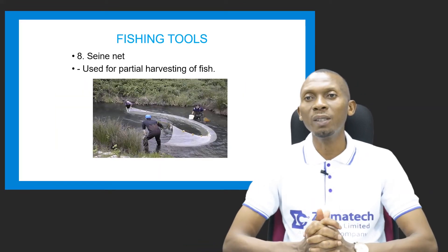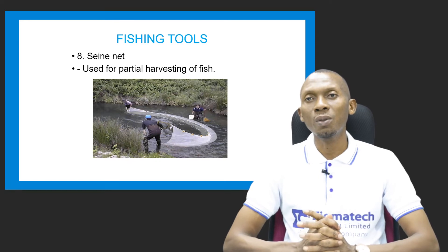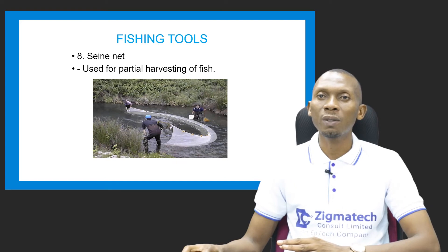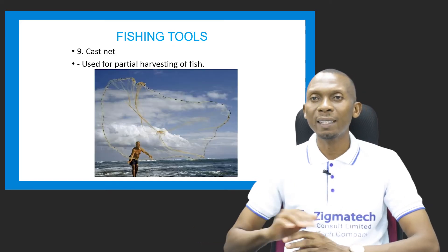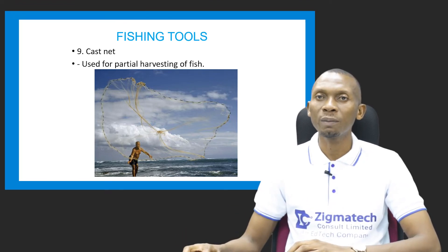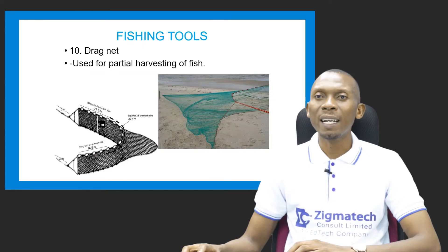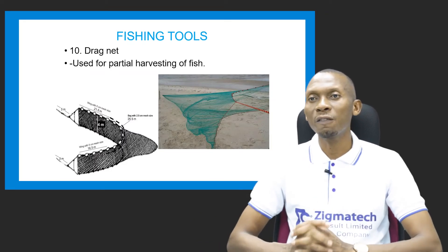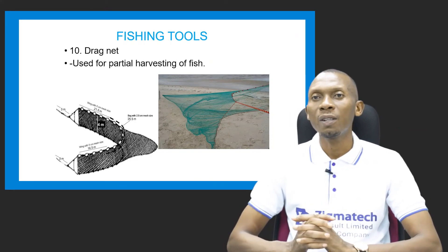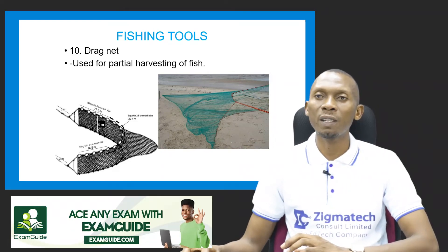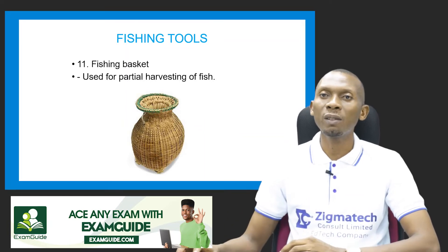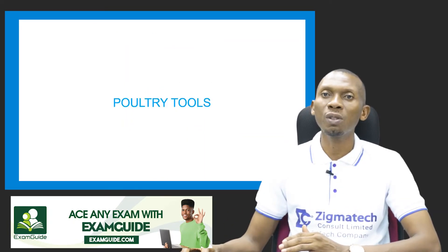We have the seine net, the cast net, the drag net, and the scoop net — all types of nets used for partial harvesting of fish. We also have the fishing basket, which is also used for partial harvesting of fish.